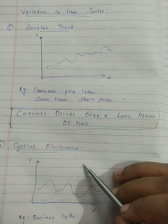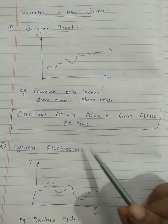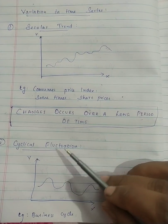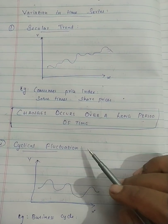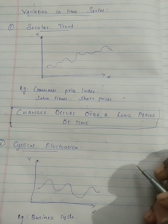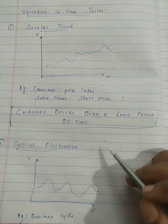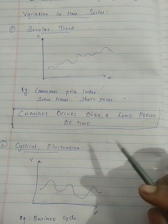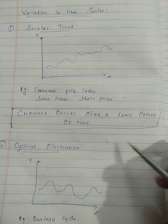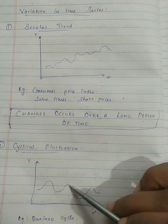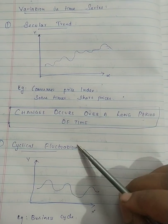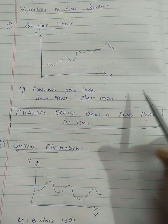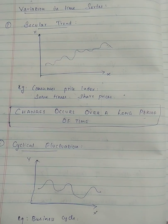This is a cyclical fluctuation. It involves a business cycle — things go up and down in cycles. Everything happens in these cycles. Business cycle is the best example of cyclical fluctuation.